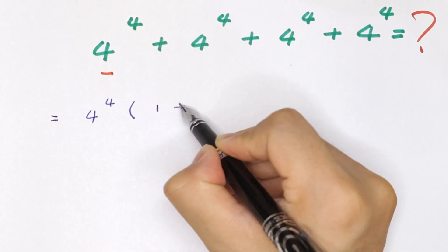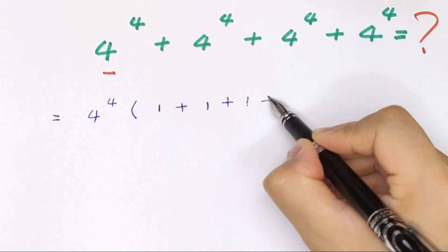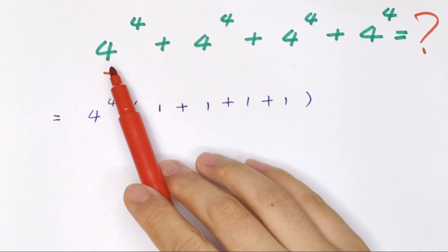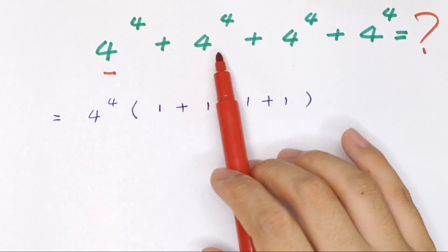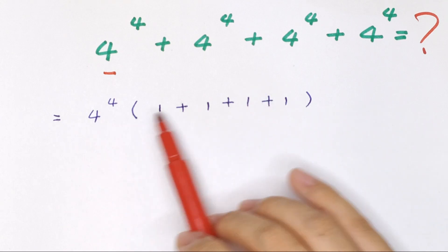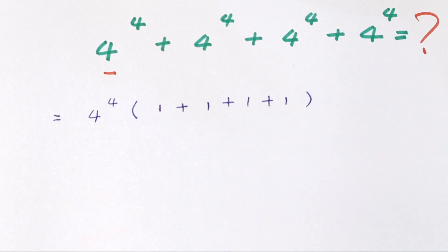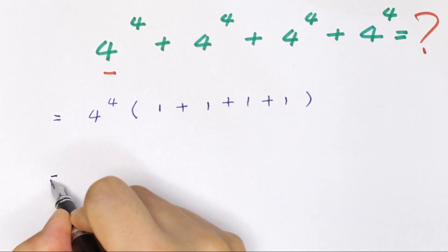times (1 plus 1 plus 1 plus 1). This times this is this, this times this is this, this times this is this, and this times this is this. Okay, it will be equal to...